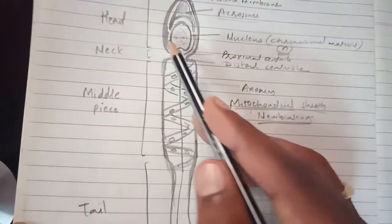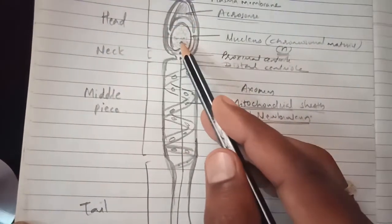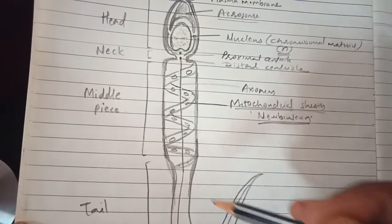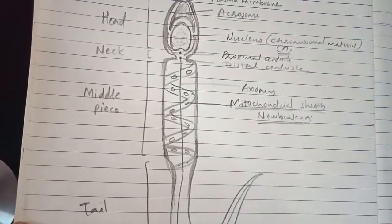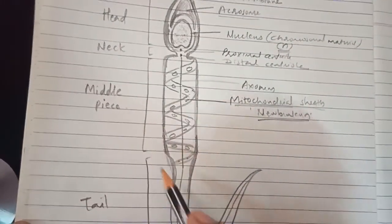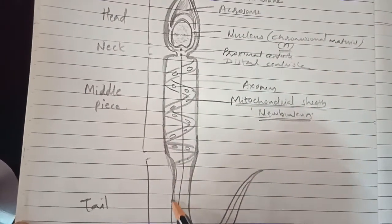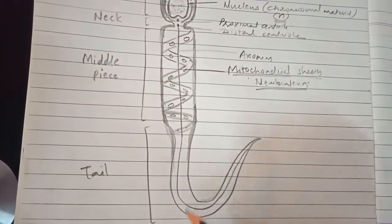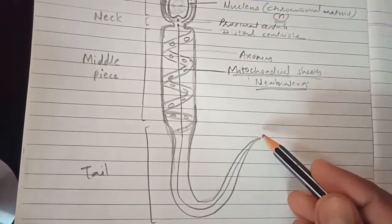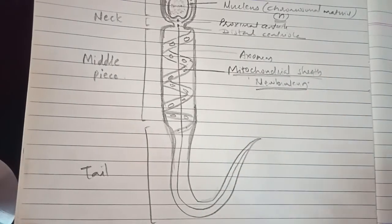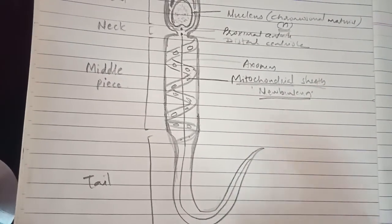The cytoplasm is very reduced in sperm, and nucleoplasm is present inside the nucleus. That is the structure of sperm. After the middle piece, the remaining part is the tail — you can extend it downward and use the full page to draw this diagram.